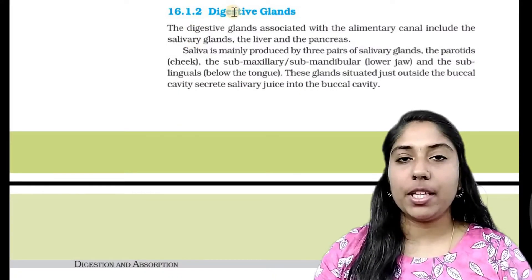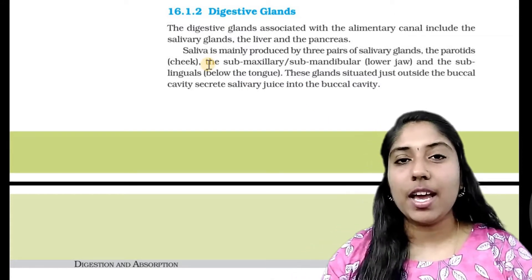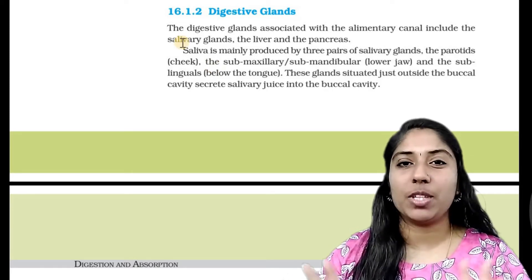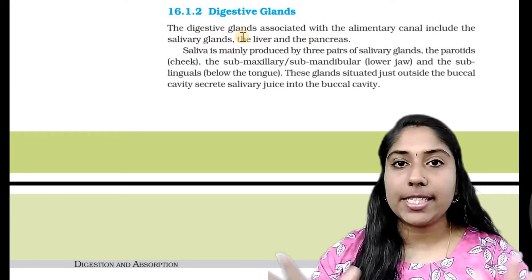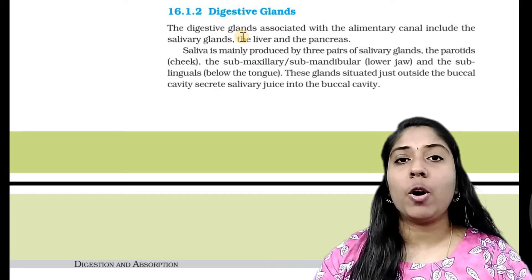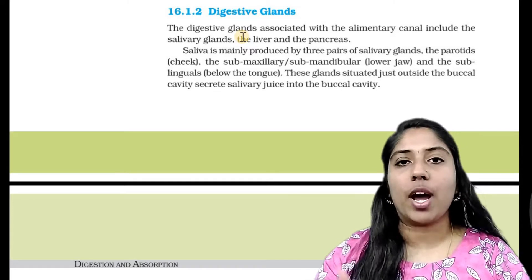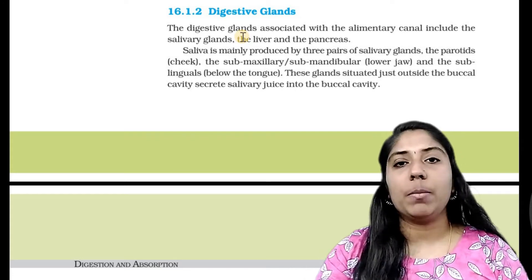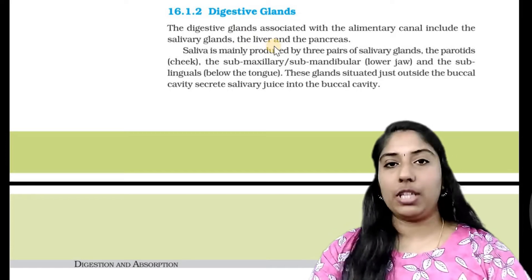How about the digestive system? I have already said it. In the elementary channel, it consists of digestive glands. What are the glands? A gland is a group of cells. For example, hormones are produced. The salivary glands, liver, and pancreas are all glands.